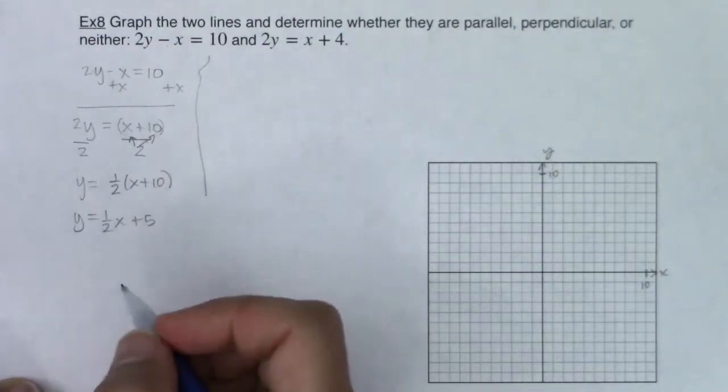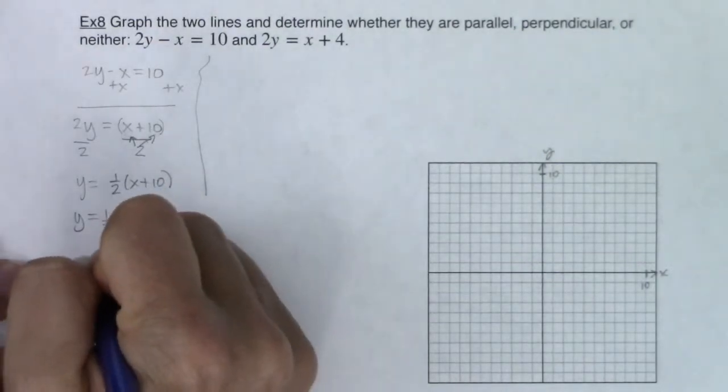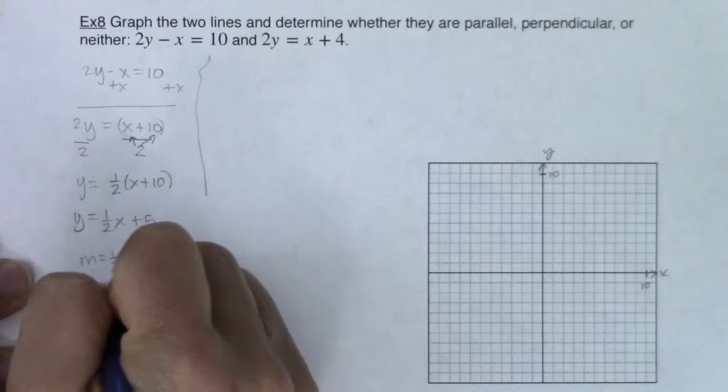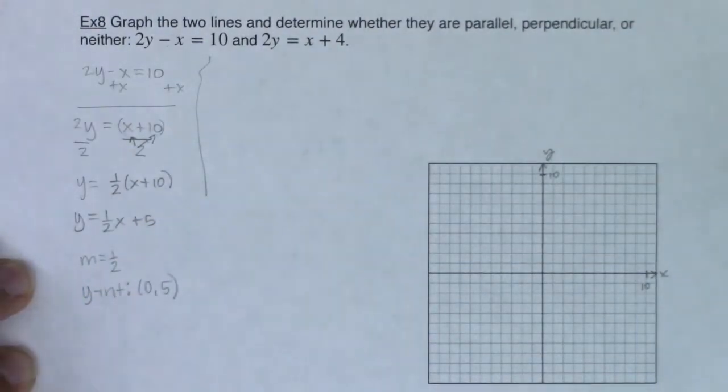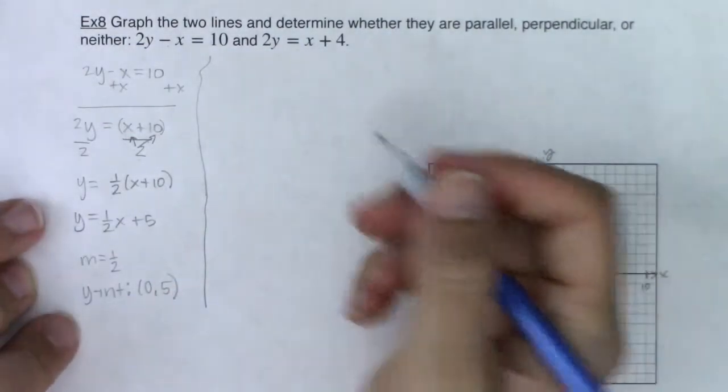So when I look at this right here, I can see, well, I have a slope of 1 half and a y-intercept not of 5 but 0 comma 5, right? We want to get into the habit of writing our y-intercepts as ordered pairs.